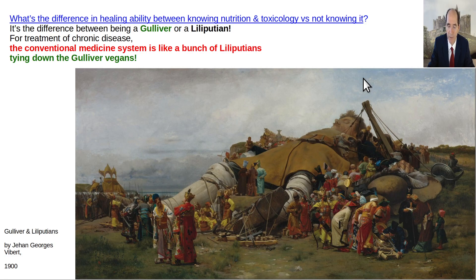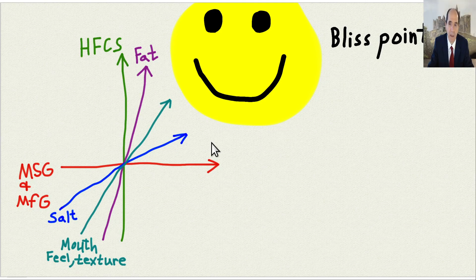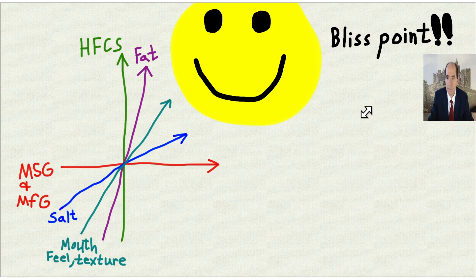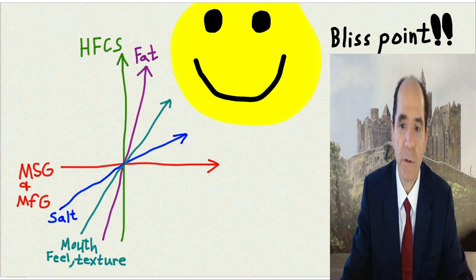Gulliver is like a low-fat, vegan, nutrition-knowledgeable person, and all the Lilliputians are like conventional doctors and nurse practitioners — because if you don't know the diet, you don't know what matters. They're a bunch of Lilliputians compared to somebody who knows nutrition and toxicology. It's like the painting 'The Blind Leading the Blind' by Pieter Bruegel, 1568. That's what you've got with all these doctors, which is why you have so many fat and sick doctors. People who eat a low-fat vegan diet are skinny. I'm 60 years old and I weigh the same as I did in senior year of high school.